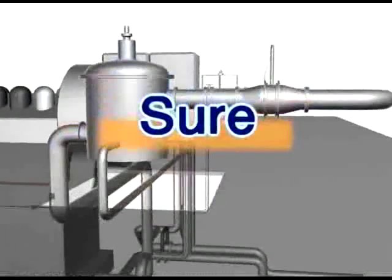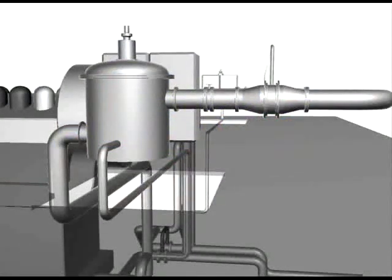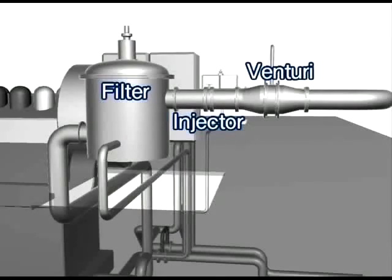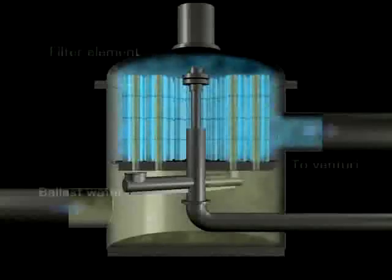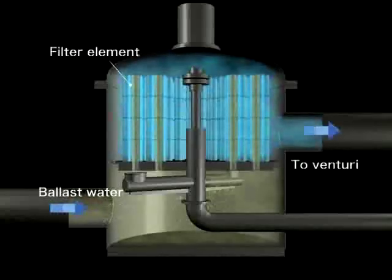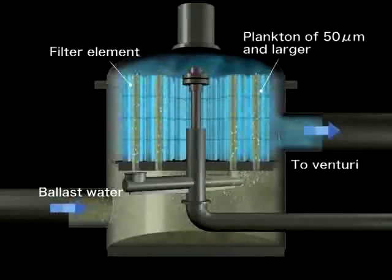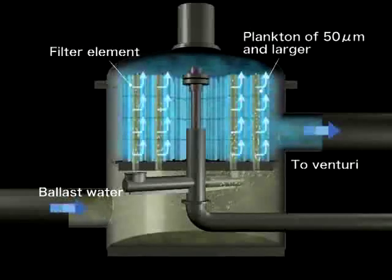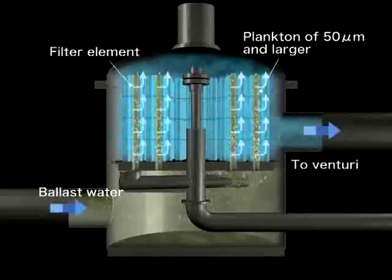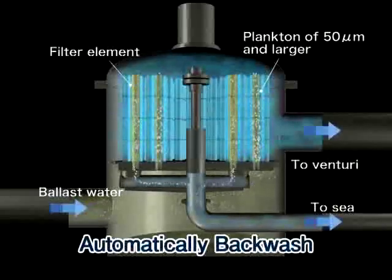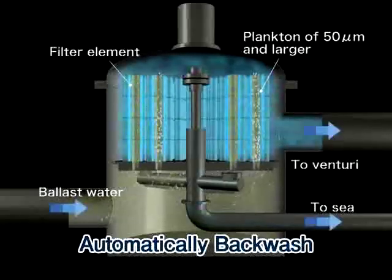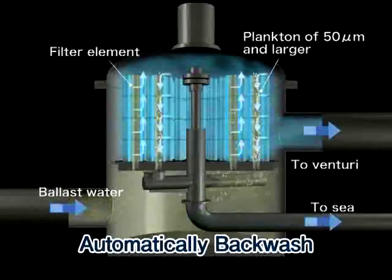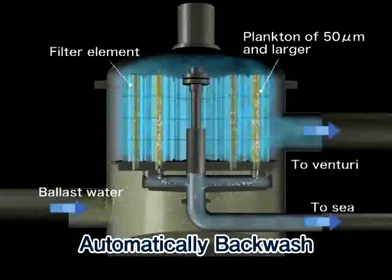First, sure treatment. The system can be broadly divided into the filter, injector, and venturi components. Treatment of ballast water taken on by the ship begins with the filter system. The ballast water enters the filters from the bottom, and plankton with sizes of 50 microns and larger are removed by the filter element. Filter elements are automatically backwashed in sequence, and the removed plankton are returned to the sea together with the ballast water. During backwashing, the other filters continue treatment.